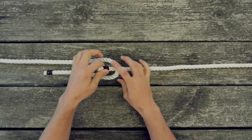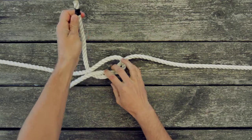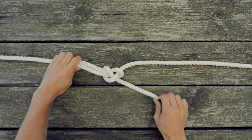Take the working end and thread it up through the bite, pass it under and around both ropes then back down through itself and tighten.